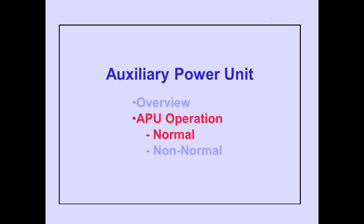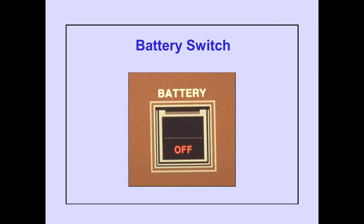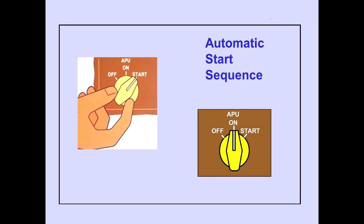Now, let's take a look at the operation of the APU. We'll begin with normal operation. The battery switch must be on to operate the APU. To start the APU, momentarily rotate the selector to the start position and release. The selector is spring-loaded to the on position. This begins the automatic start sequence.